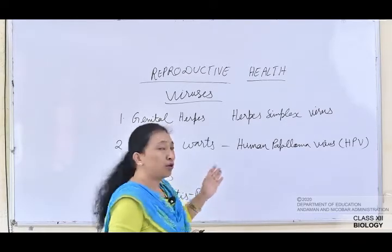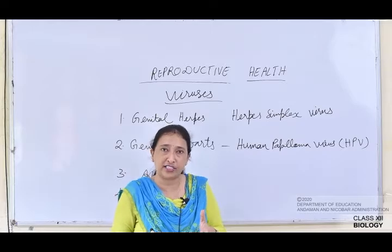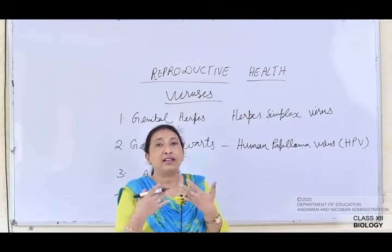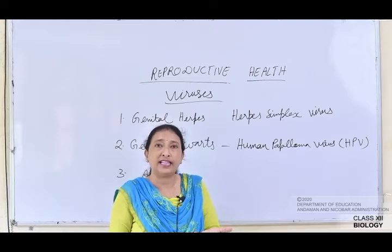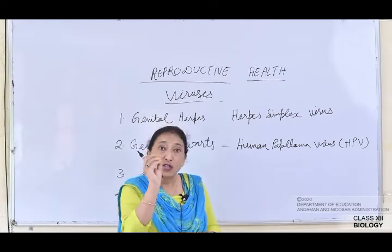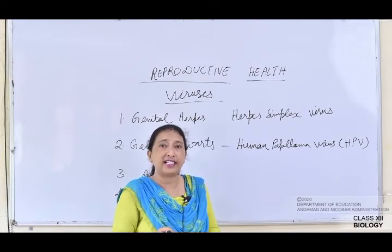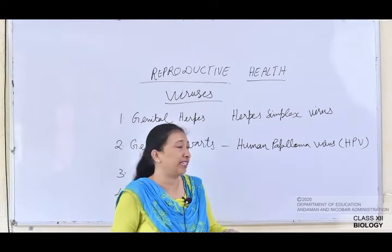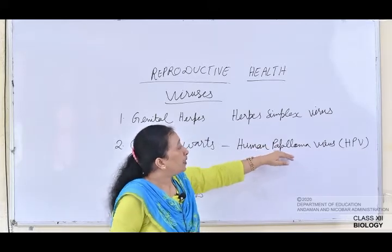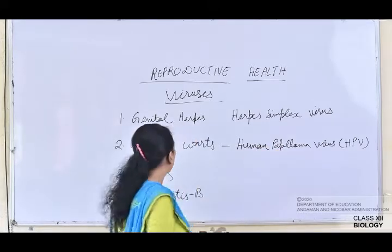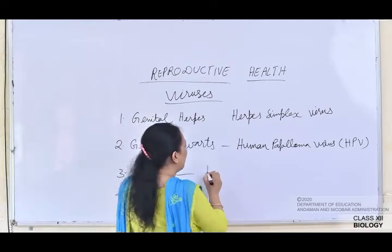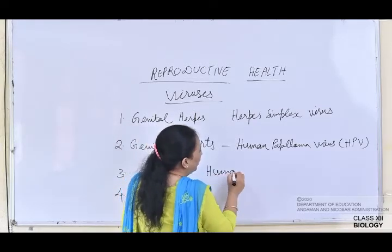If a pregnant woman is already affected by genital warts, when she gives birth the child can be heavily infected by the sores and ulcers present in the genital areas. The causative organism of AIDS is the Human Immunodeficiency Virus — HIV.